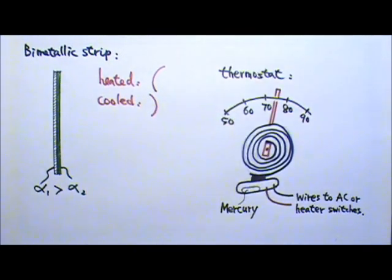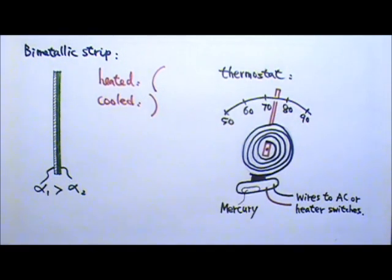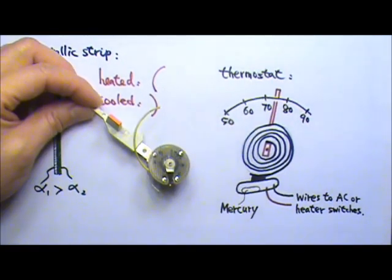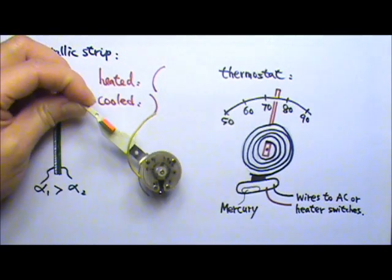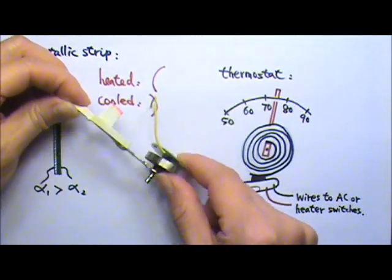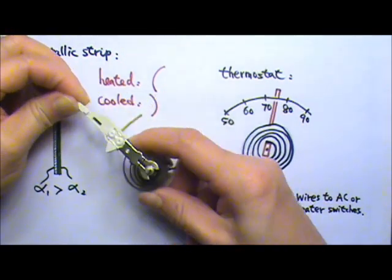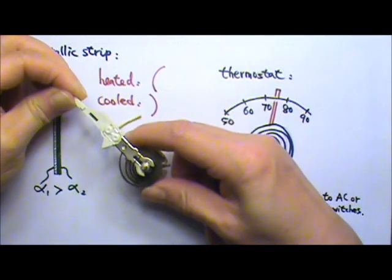Since a bimetallic strip's curvature depends on the temperature, it can be used as a thermometer. For example, this piece is from the old thermostat in my house. If I turn it around, you can see that this curled up metal is a bimetallic strip.